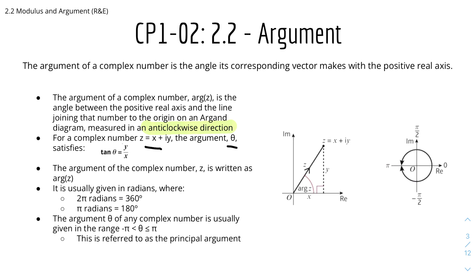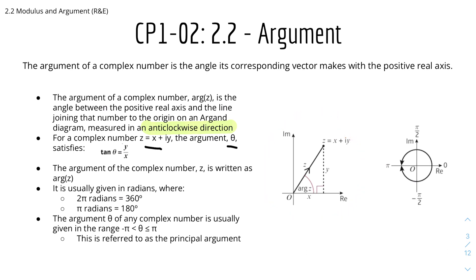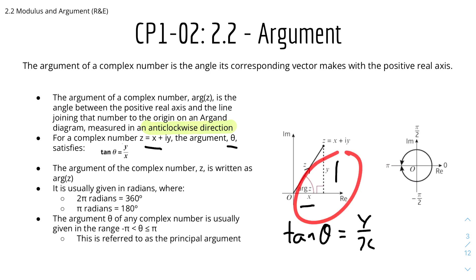So imagine this diagram. We have z equals x plus iy, and this will be the argument of z. Using trigonometry, when we have the y and x values, because it's a coordinate of the complex number, it's basically tan theta equals y over x. The argument of your complex number z is written as arg z.